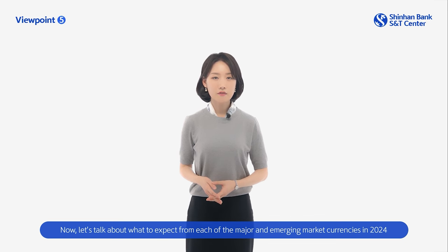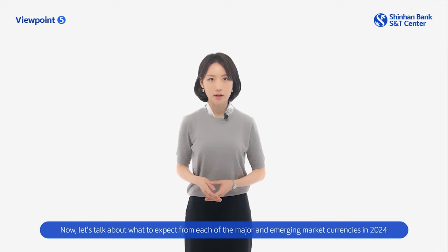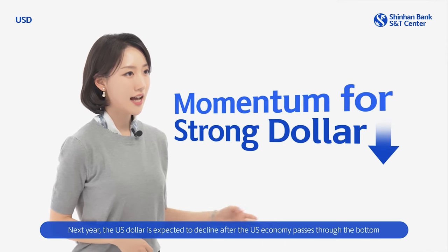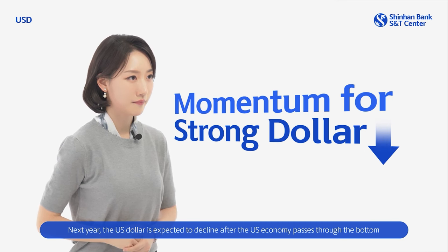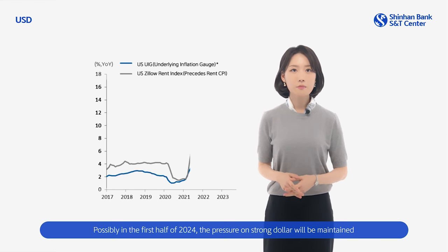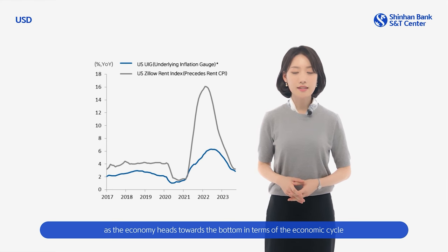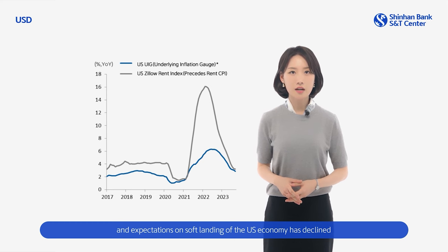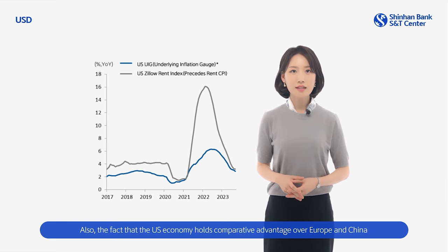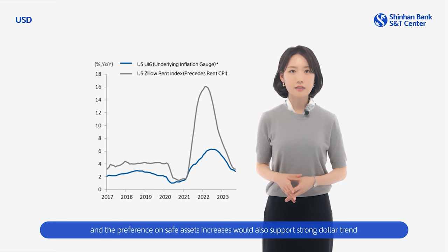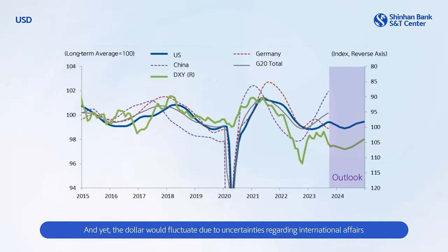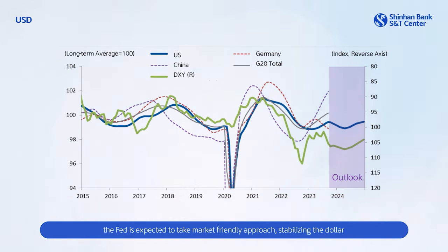Now let's talk about what to expect from each of the major and emerging market currencies in 2024. The U.S. dollar is expected to decline after the U.S. economy passes through the bottom. Possibly in the first half of 2024, pressure on a strong dollar will be maintained as the economy heads towards the bottom of the economic cycle and expectations of a soft landing have declined. The fact that the U.S. economy holds comparative advantage over Europe and China, and the preference for safe assets increases, would also support the strong dollar trend. Yet the dollar would fluctuate due to uncertainties regarding international affairs. But while inflation slows down, the Fed is expected to take a market-friendly approach, stabilizing the dollar. The expected range of the dollar index is from 101 to 108.